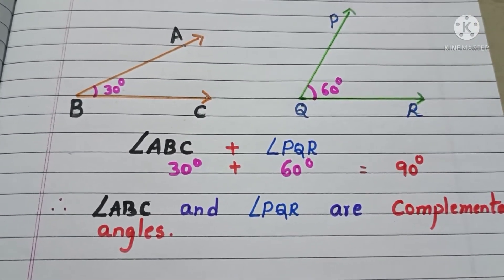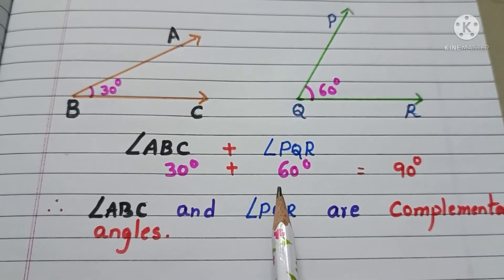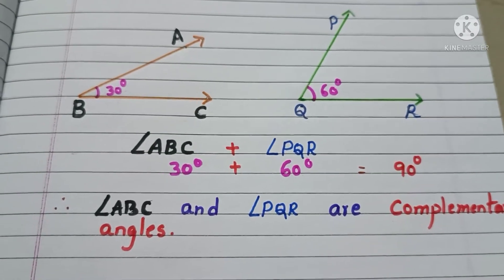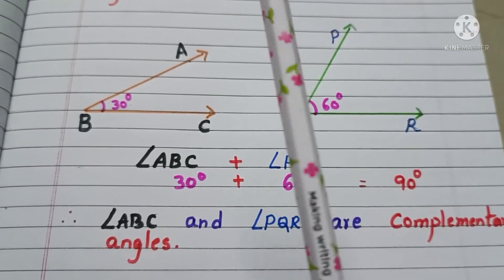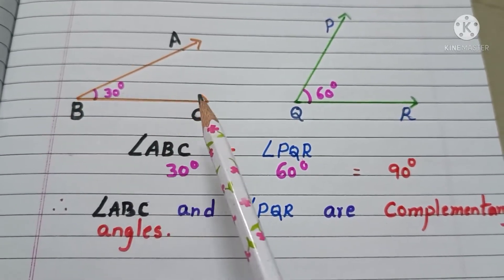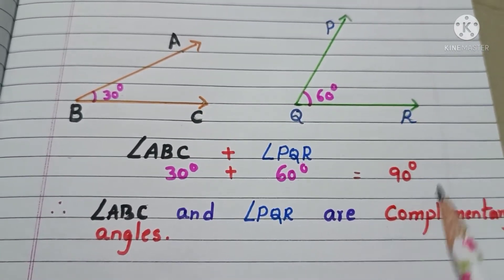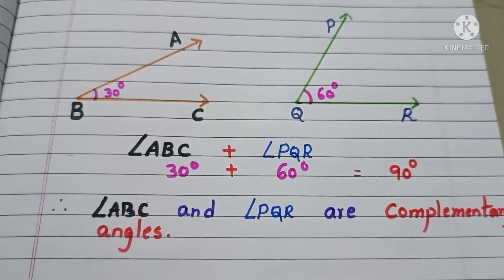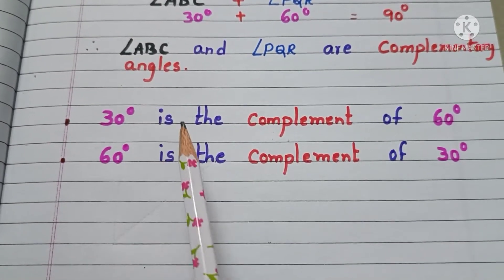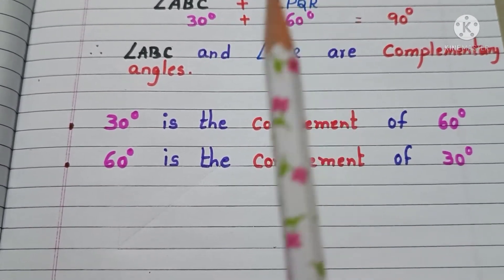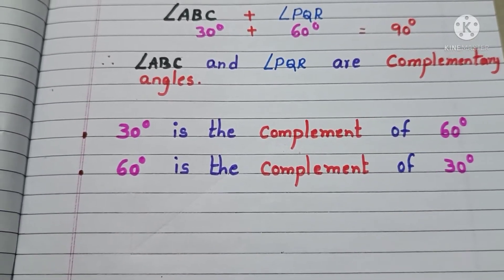Now, take the sum of two angles. 30 degrees plus 60 degrees, that is equals to 90 degrees. Therefore, we can say that the angles ABC and PQR are complementary angles. And also, we can say that 30 degrees is the complement of 60 degrees and 60 degrees is the complement of 30 degrees.